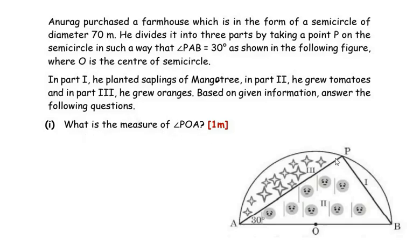The first sub-question asks: what is the measure of angle POA? Anurag's farmhouse is a semicircle with center O. He took a point P on the circumference and joined it to points A and B, forming three parts. Triangle PAB is formed, with the angle at point A given as 30 degrees.